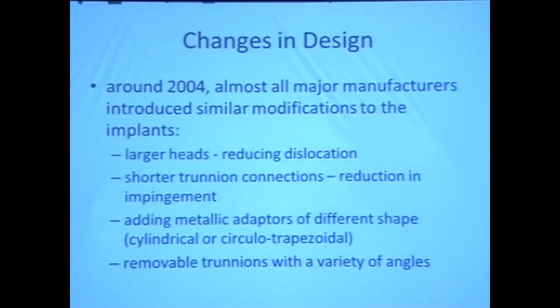At my institution, we do a tremendous amount of immunoperoxidase and immunologic studies trying to identify B cells and T cells, and giving it a score so that if it is a score of 8 to 10, the patient definitely has severe immunologic hypersensitivity reaction and you better look for something else. The changes in design started around 2004 — all the major manufacturers introduced similar modifications to the implants: larger heads reducing dislocation, shorter trunnion connections reducing impingement, adding metallic adapters of different shapes, cylindrical or trapezoidal, and variations in trunnion angles.